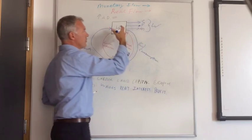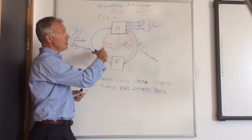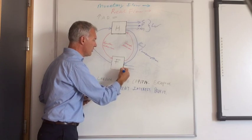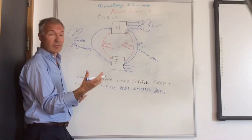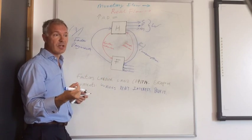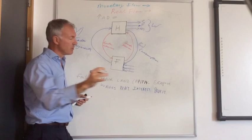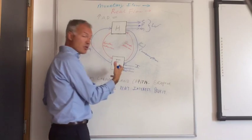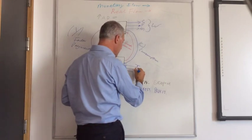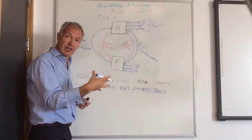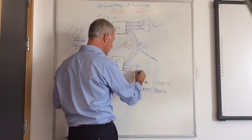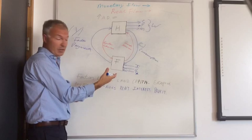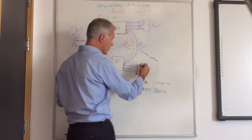So basically we have three withdrawals of expenditure from the circular flow. But on the other side, we've got three injections into the circular flow. Savings often accrue in a bank, and banks sometimes enable firms to invest in the economy, in new capital, for example. So we've got investment as an injection into the circular flow. We've got government expenditure as an injection into the circular flow. And of course, we've got exports, from abroad, the cash, the money for exports is injected into the circular flow.